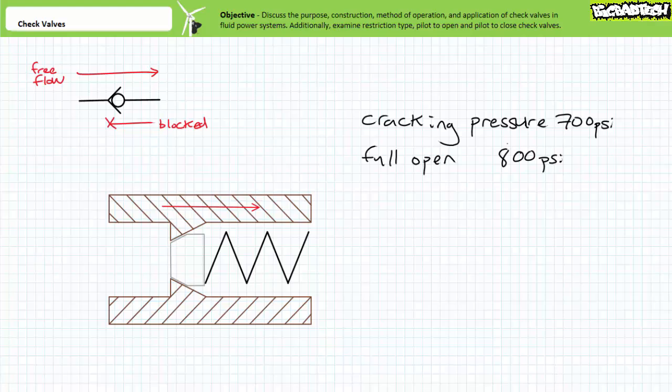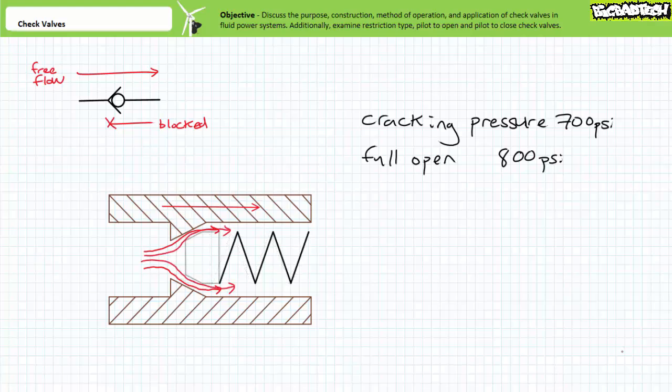Up to 700 psi, even the free flow direction of the check valve remains closed and flow rate through it is 0 gallons per minute. However, when pressure hits 700 psi, the poppet ever so slightly cracks open and diverts a small portion of the provided flow to the tank. As pressure rises from 700 to 800 psi, the poppet opens more and diverts an increasing portion of flow to the tank.